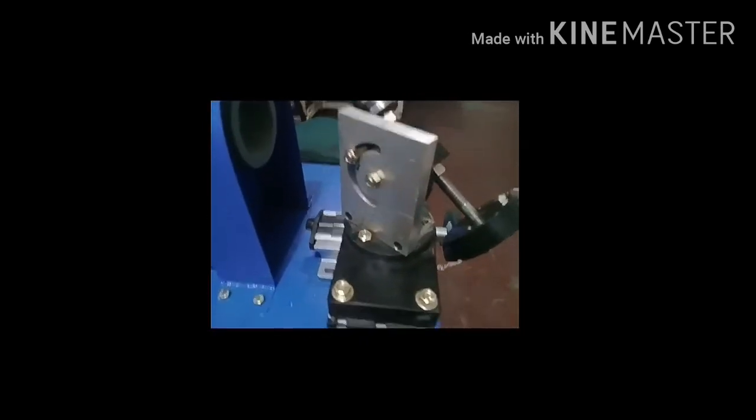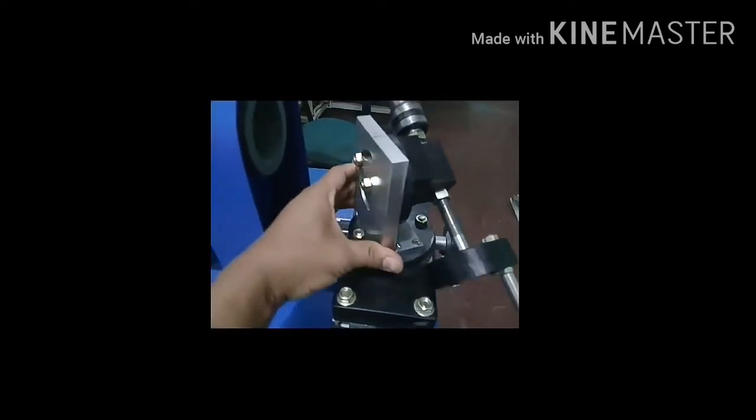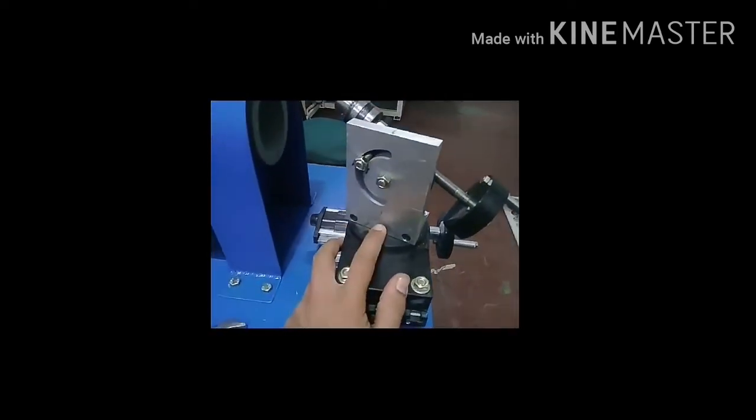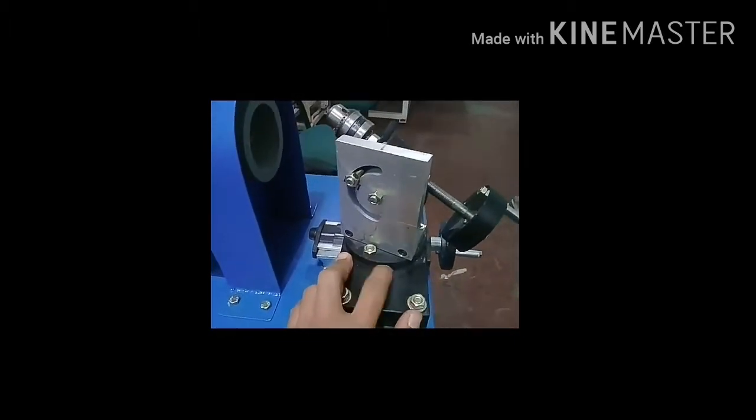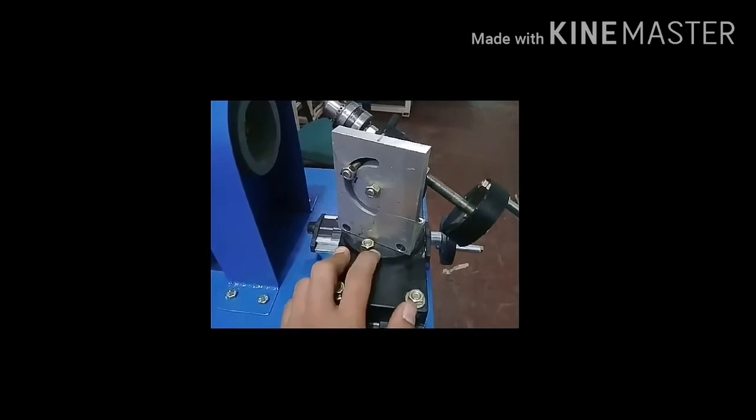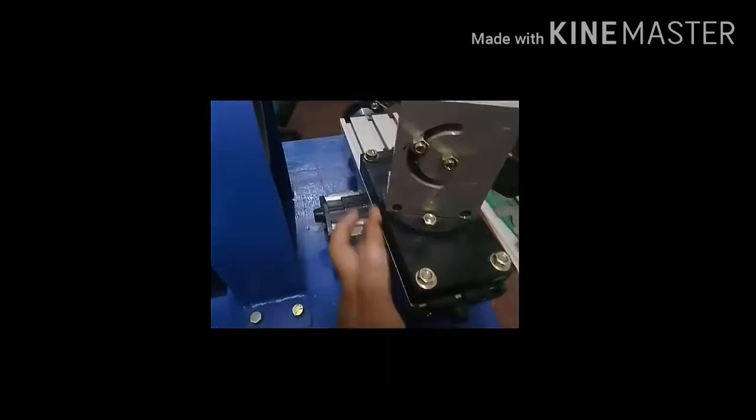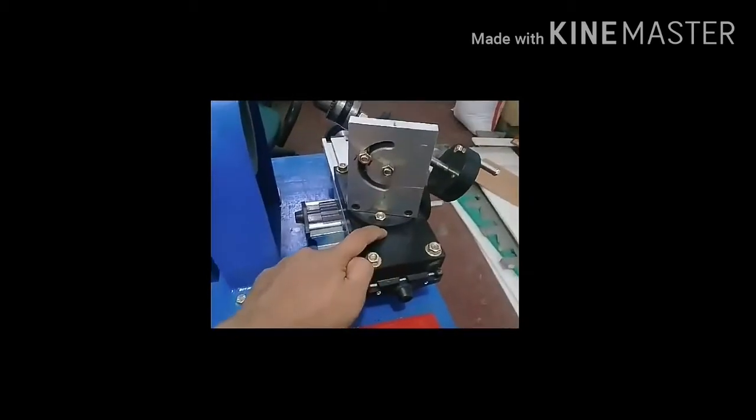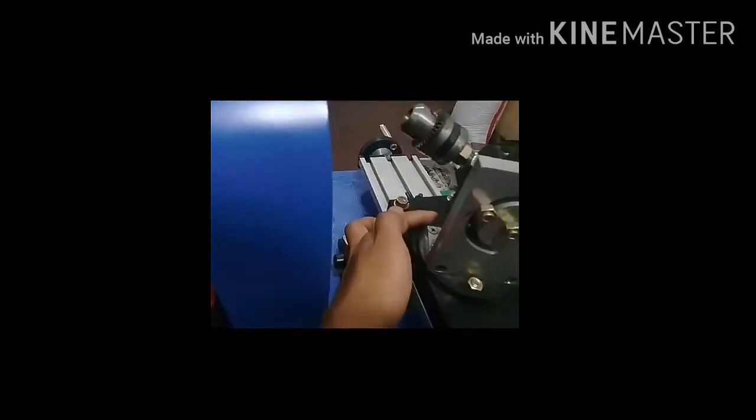Dari di sini kita gambar desain dulu, terus kita buat programnya, lalu kita buat pakai mesin CNC. Ini di sini L, di bawah L ada alas juga lingkaran. Di bawah lingkaran ada alas kotak seperti ini. Di sini ada alur melingkar seperti ini, setengah lingkaran di bagian sini dan di sebarang.